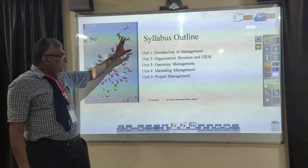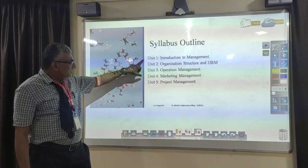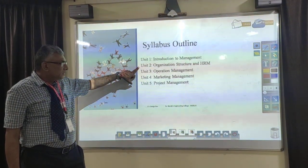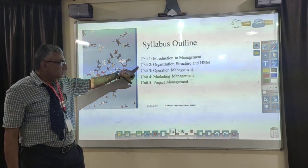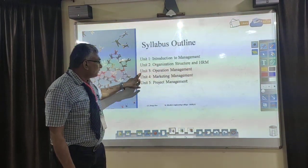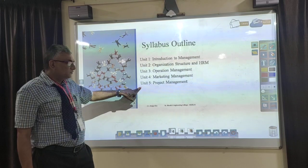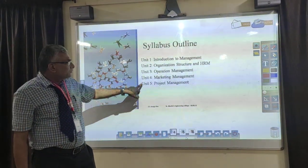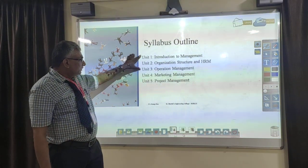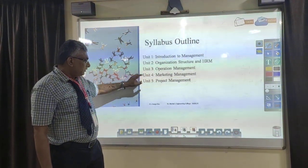As per JNTU syllabus, there are five units as usual. The first unit deals with introduction to management. The second unit deals with organizational structure and HRM — Human Resource Management. The third is operations management. The fourth is marketing management. And the fifth is project management. The first two and a half units form the first part, and the last two and a half form the second.